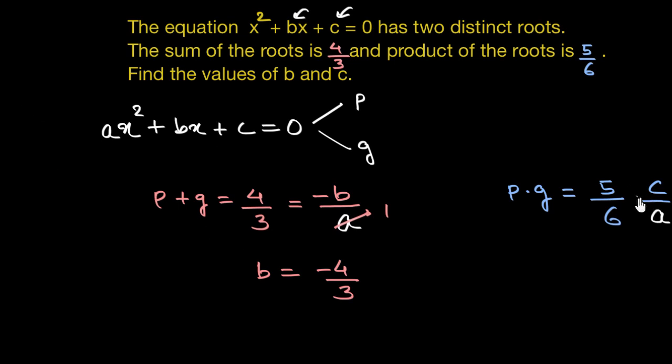Similarly, c by a is equal to 5 by 6. In our case, a is 1. So c is equal to 5 by 6. And I think we are done here.